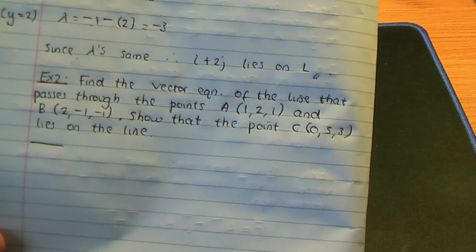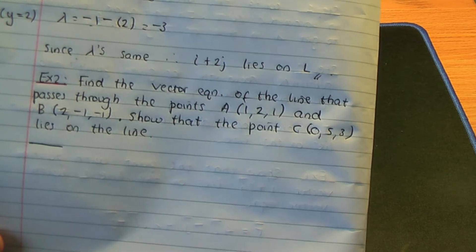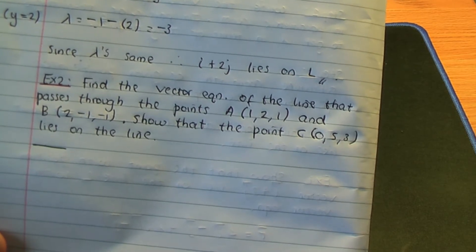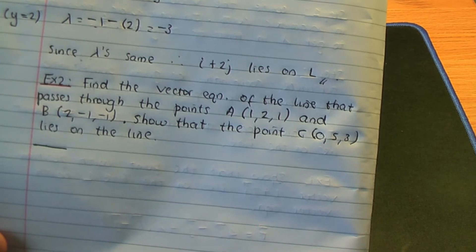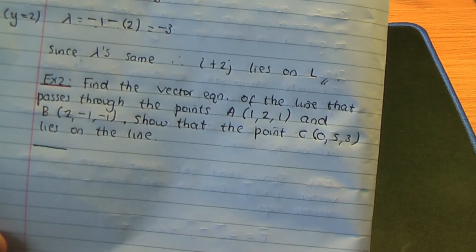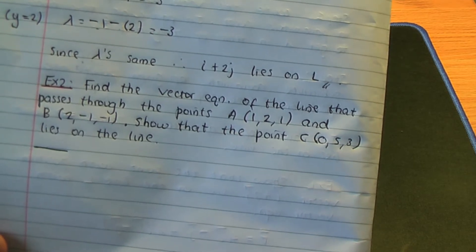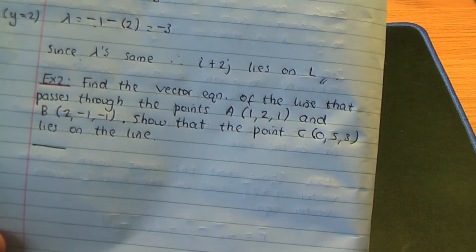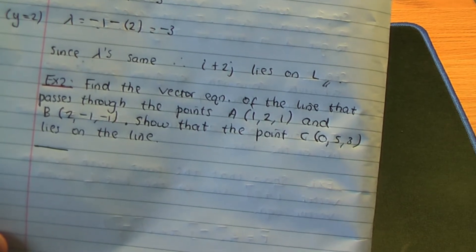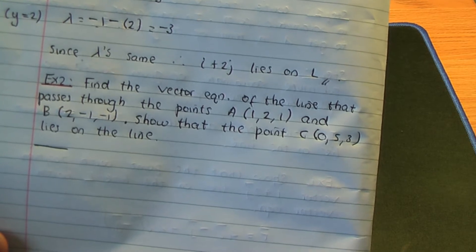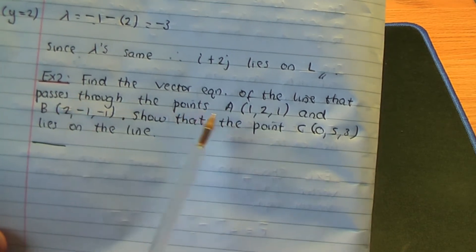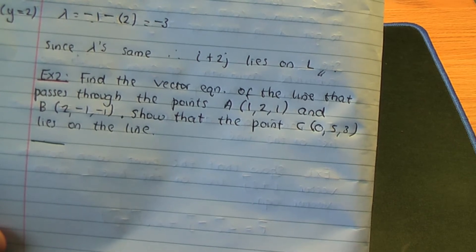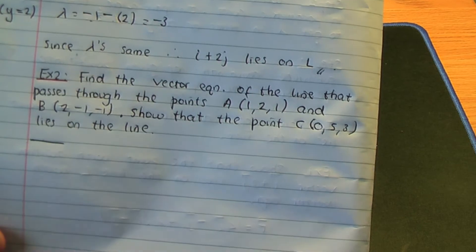Remember, in one of the videos I showed you how to find a vector equation of the line passing through one fixed point and having a vector parallel to your line, and the formula for that is R equals A plus lambda M. In another video, I explained how to work out the vector equation of the line passing through two fixed points, with the result R equals A plus lambda times (B minus A).